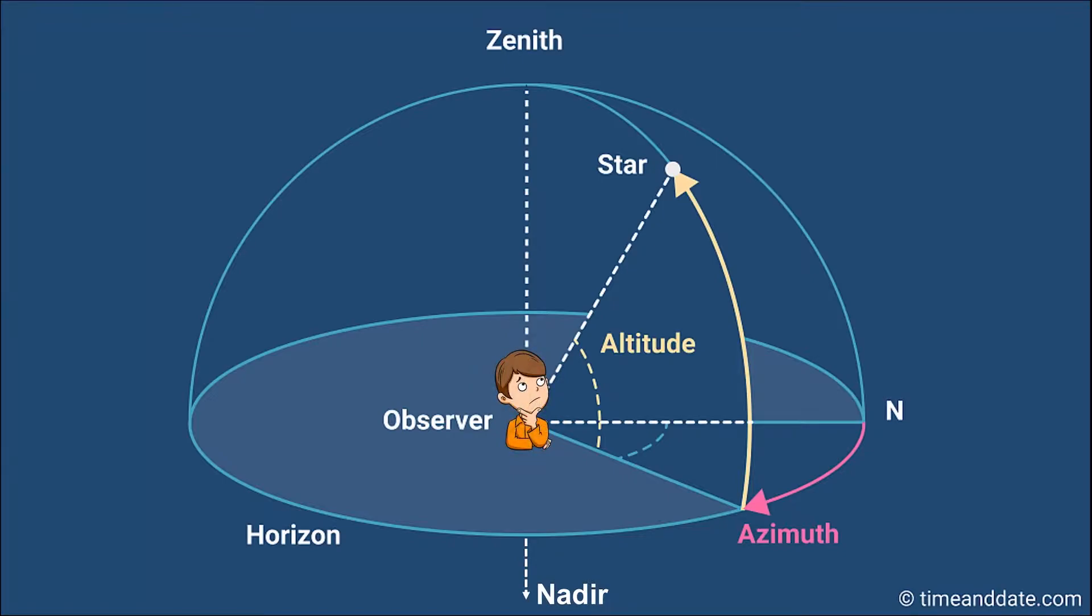Say you were stargazing one night and you wanted to know the position of a bright star in the night sky. You can determine its altitude by measuring how high above the horizon the star appears to be and determine its azimuth by measuring how many degrees you've had to rotate clockwise from directly due north to face this star.